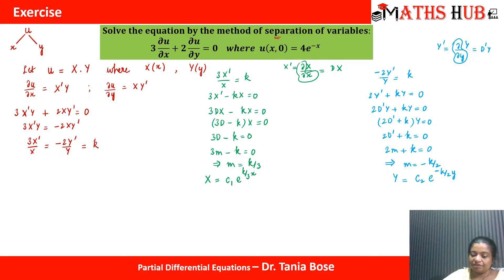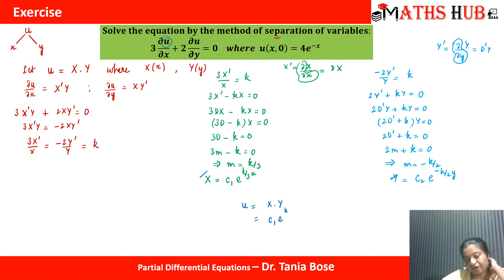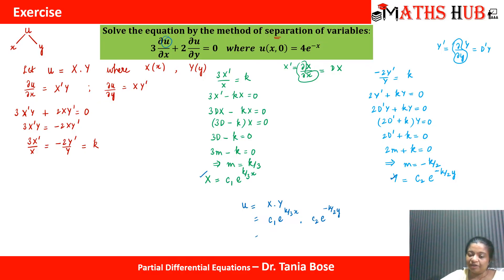Now since u = X·Y, substituting both solutions gives: u = c1·e^(k/3·x) · c2·e^(-k/2·y). Since c1 and c2 are constants, their product is another constant c3. The exponents add, so: u = c3·e^(k/3·x - k/2·y).